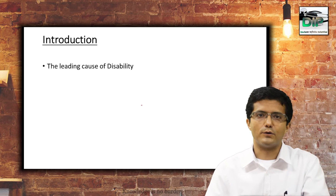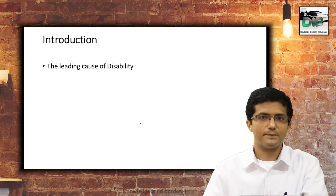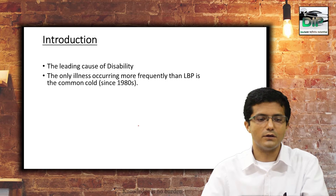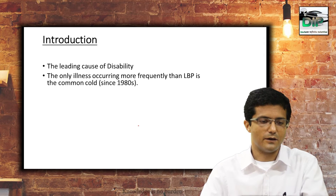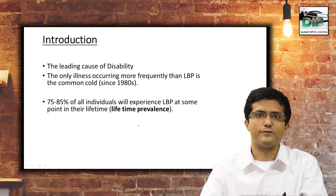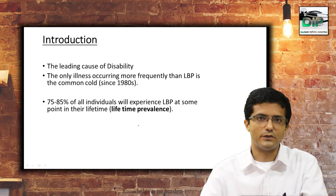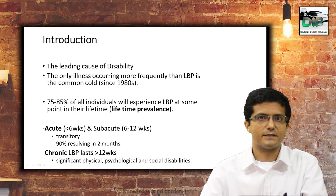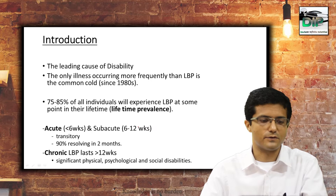Low back pain is a leading cause of disability — only the common cold occurs more frequently. Since the 1980s, perhaps before, other infective diseases were more common. The lifetime prevalence of low back pain is 75 to 85 percent, meaning 75 to 85 percent of all individuals will experience it at some point. This includes acute low back pain, lasting less than 6 weeks, or sub-acute, from 6 to 12 weeks.